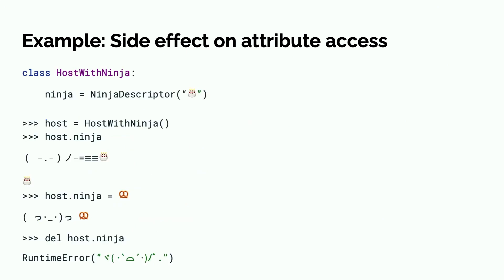So, in practice, you use a descriptor by setting it to be the attribute on a class, and you create an instance of it. Then, when you either call that attribute on the class or instances of it, it will call that descriptor's get method, and return the return value of that get method. And the same for set or delete. So, you might wonder, why is host.ninja's return value a cake emoji?